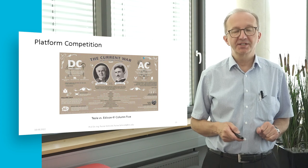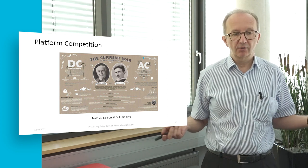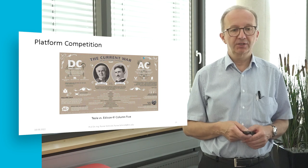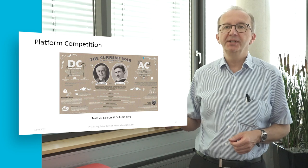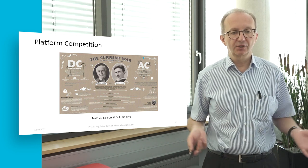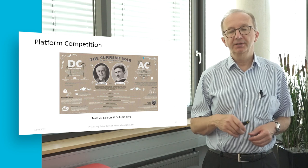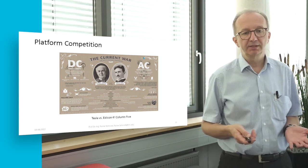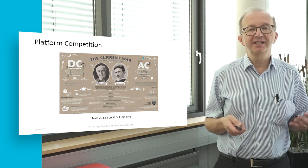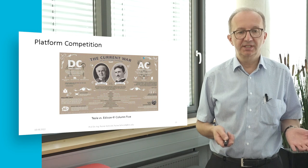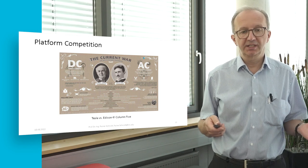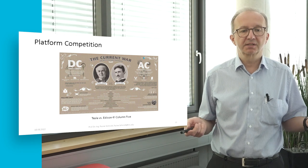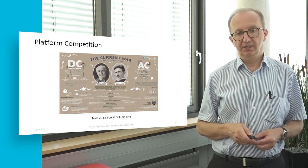Electricity also created the first huge platform competition between Edison and Tesla. Edison proposed to use direct current with the same voltage, while Tesla proposed alternating current — current where the voltage follows a sine curve. The important advantage of Tesla's invention was that electricity presented as alternating current can be transformed, and that is the precondition for establishing large supply networks.